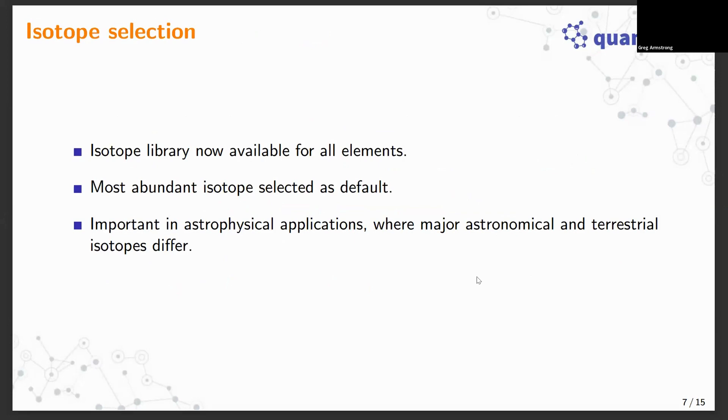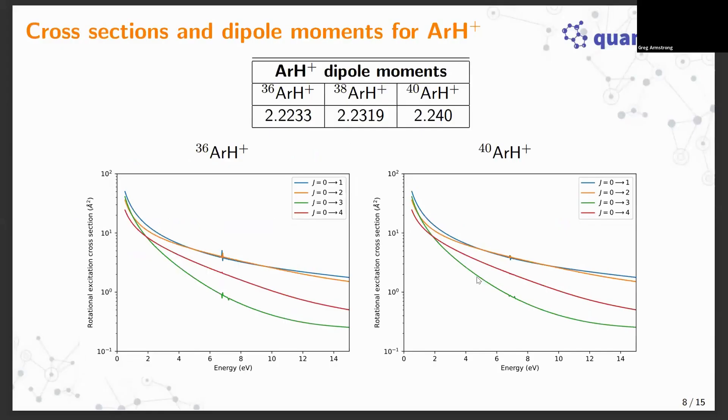A case in point is argon H+, for which argon-40 is terrestrially dominant but astronomically it's argon-36. You can now carry out calculations for any of the argon isotopes. There is also argon-38 which is not so abundant. QEC can calculate the dipole moments for all of these isotopes of argon H+. They do differ slightly and they're in line with measured values. As a demonstration I've calculated rotational excitation cross sections for both isotopes just as easily.